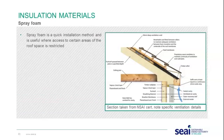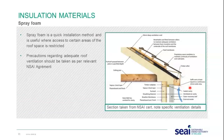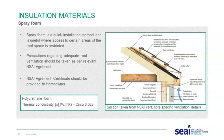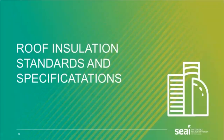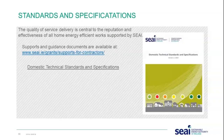Spray foam is also a quick installation method and is useful where access to certain areas is very restricted. Precautions regarding adequate roof ventilation apply — you can see the soffit vent provides a continuous 25 millimetre gap to allow air to come up behind the insulation, leaving the required 50 millimetre gap. An NSAI certificate should be provided to the homeowner. The thermal conductivity is roughly 0.028.